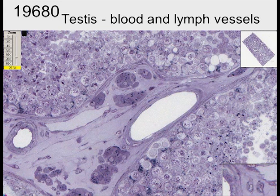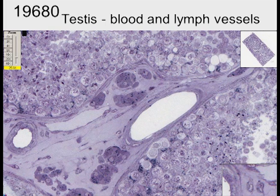Here again, we see a toluidine blue of the human testis, showing you blood vessels, Leydig cells, a host of germ cells in the tubules, the lumen of the tubule, and Leydig cells in the interstitium. The Leydig cells have a very big nucleus with a very big nucleolus. In this case, we see some granularity, and there is some lipid stored in these Leydig cells.